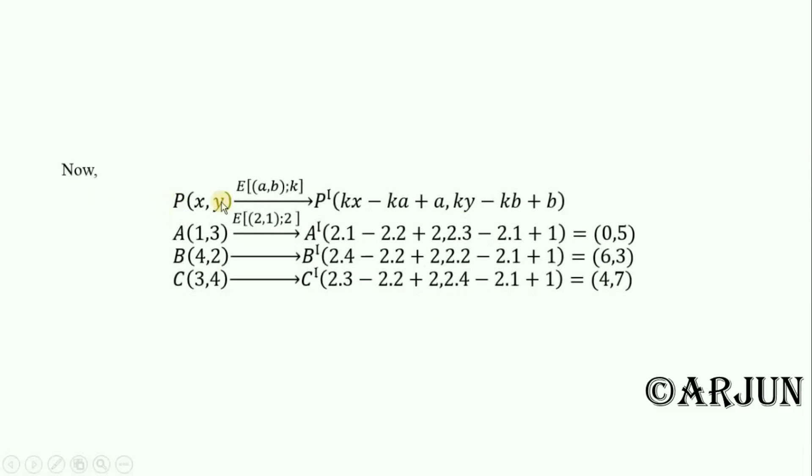In the previous video we discussed center at O. When center is origin, that is (0,0), and scale factor K, the image of P(x,y) was KX comma KY. Simply K into X and K into Y. But in this case, center is AB, not (0,0).